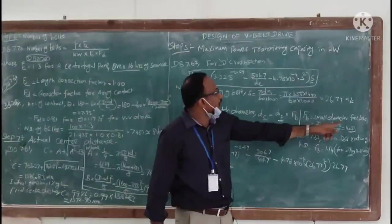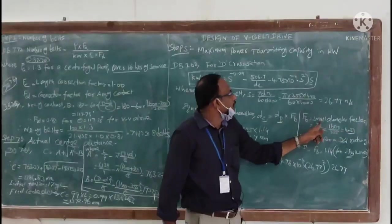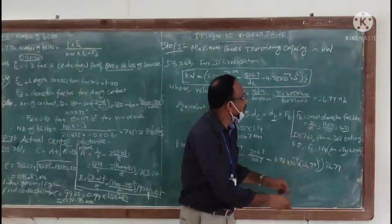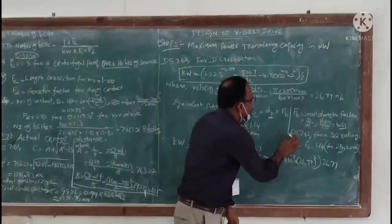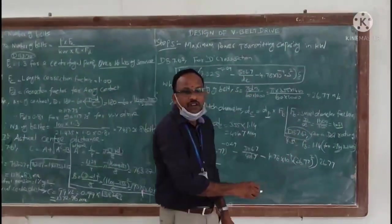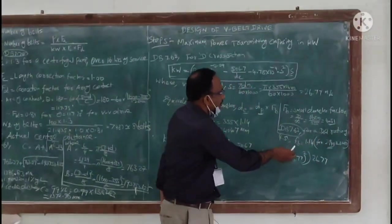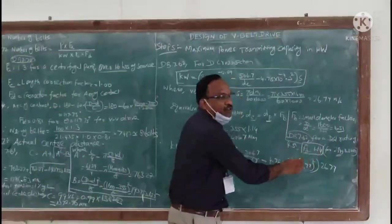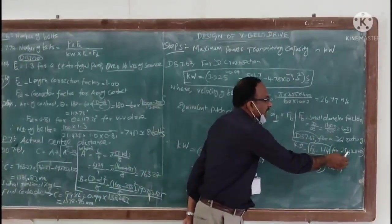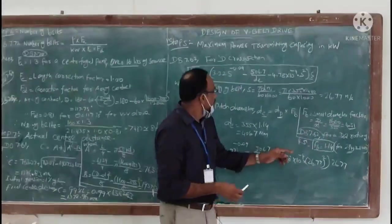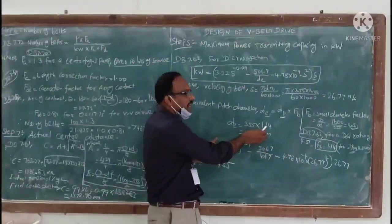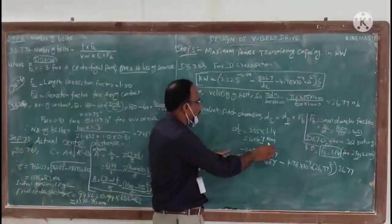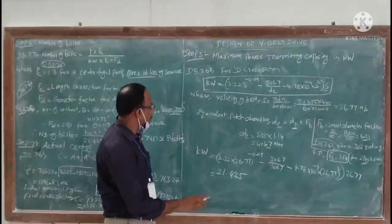Diameter of minimum pulley is 355. Fv is we are going to calculate by the formula, that is small diameter factor D by d, that is 1600 by 355 equals 4.51. From data book 7.62, for this D by d ratio we can take Fv is 1.14 for the values of 2.94 and over.